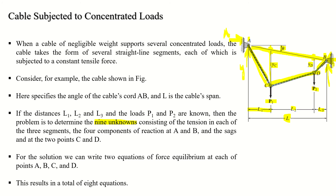The nine unknowns are: four external reaction components (Ax, Ay, Bx, By), three tensile forces — one in each cable segment (T_AC, T_CD, T_DB) — and two sag values (YC and YD). That gives nine unknowns consisting of tensions in each segment, four reaction components, and the sags of points C and D.